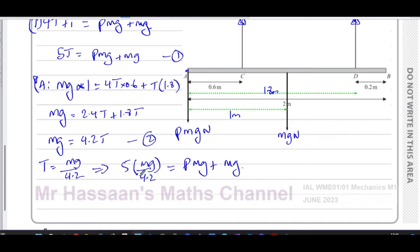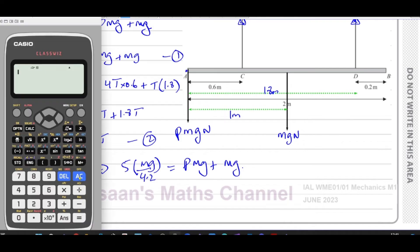So now I can say 5 times mg over 4.2 equals Pmg plus mg. So you have 5 divided by 4.2, which gives us 25 over 21.